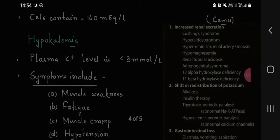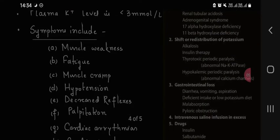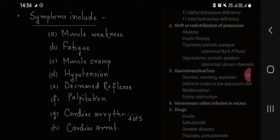Hypokalemia. Plasma potassium level is less than 3 mmol per liter. Symptoms include muscle weakness, fatigue, muscle cramps, hypotension, decreased reflexes, palpitation, cardiac arrhythmia and cardiac arrest.